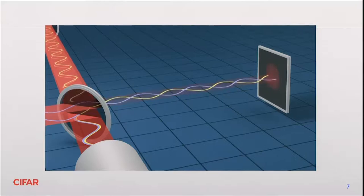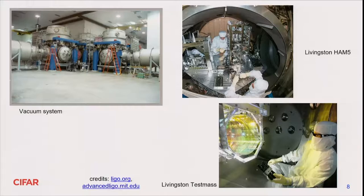There's a vast amount of extra difficulties, challenges, and fine print in this experiment. Here I'm showing a few images of the LIGO instrument in Livingston. This is the central station with the beam splitter. These vacuum vessels are about four or five meters high, and here is one arm and the other arm going off for four kilometers.